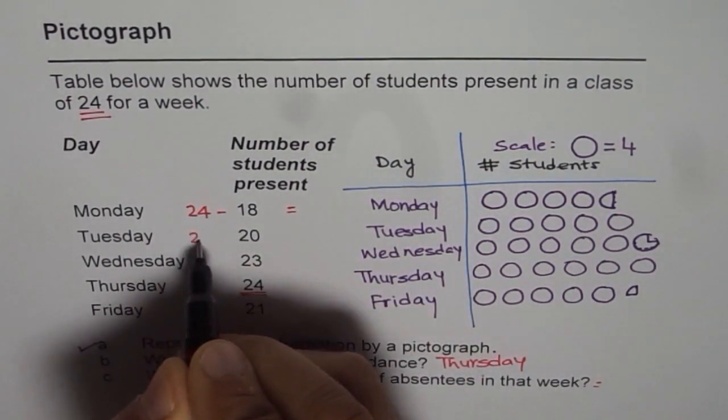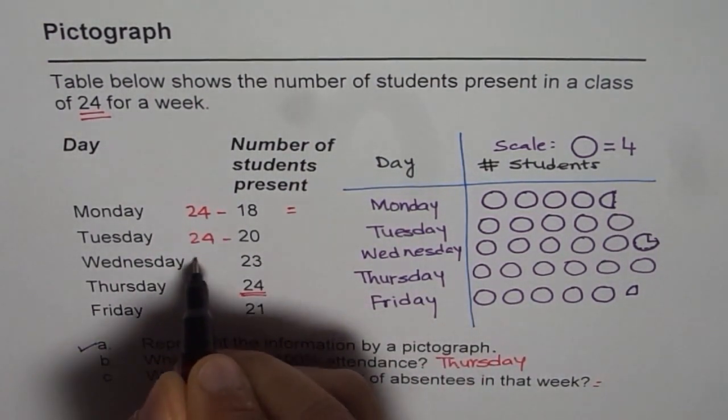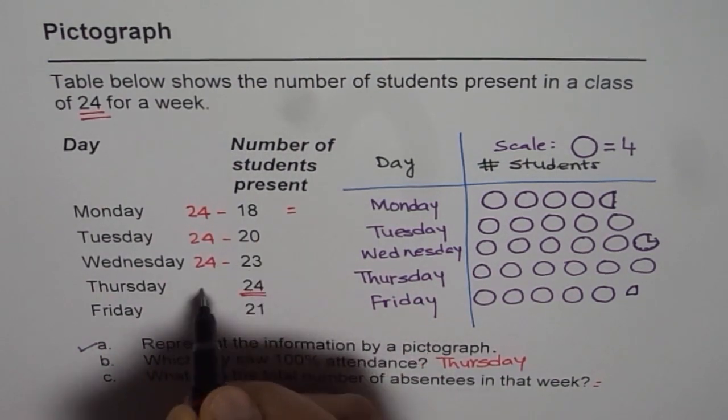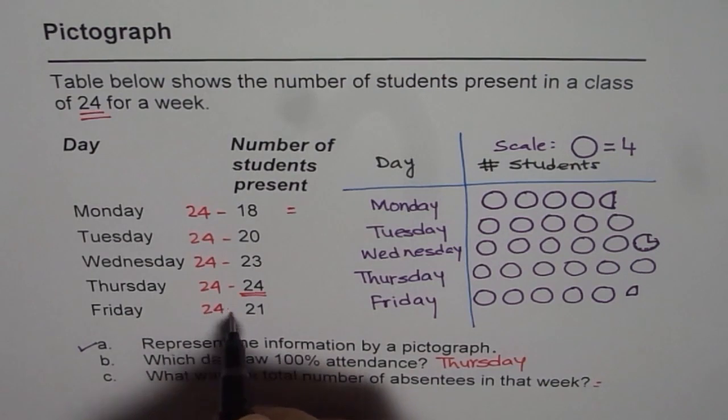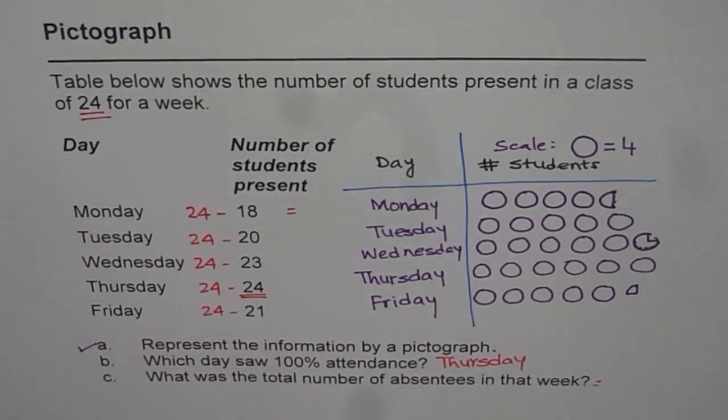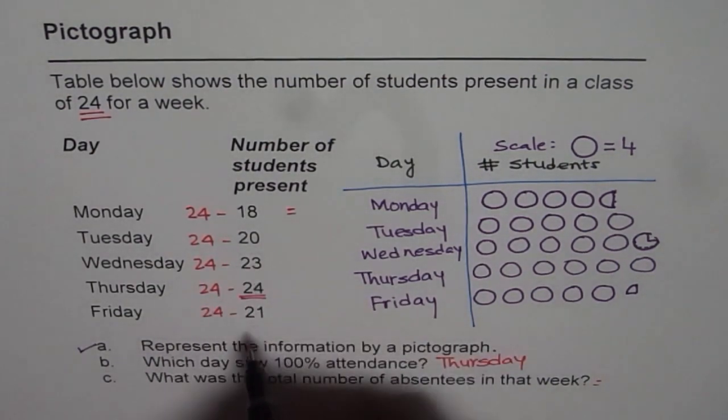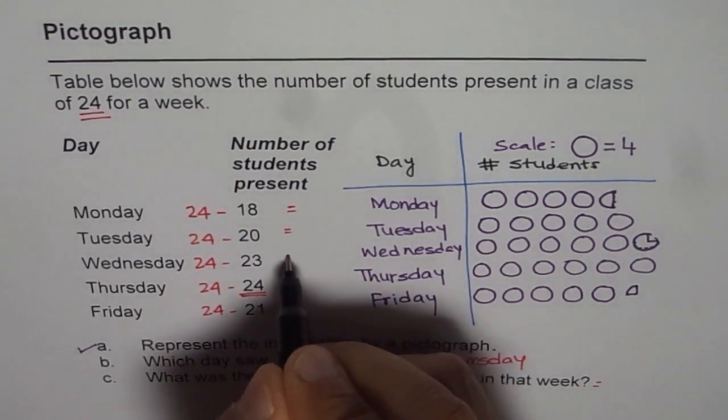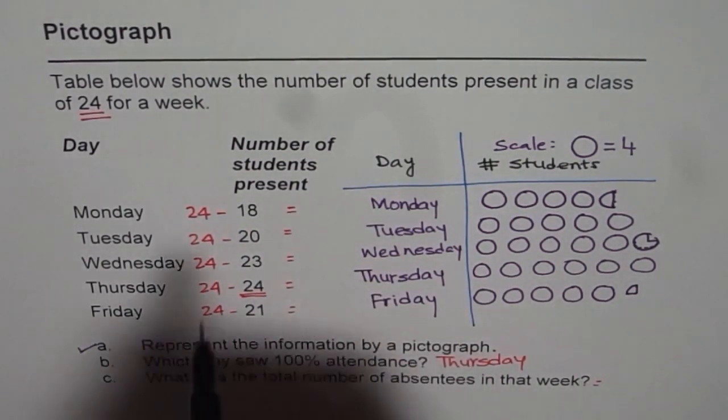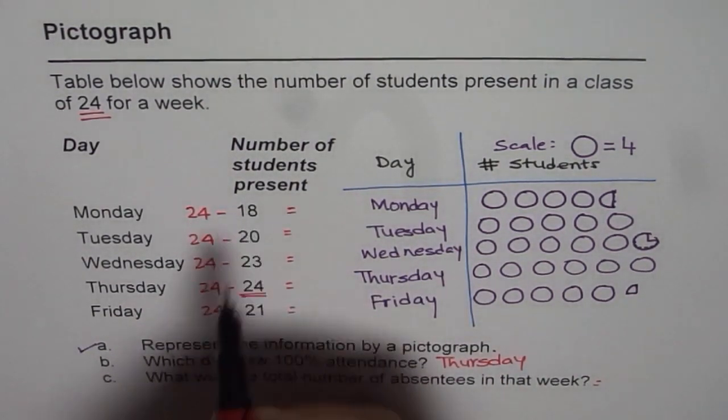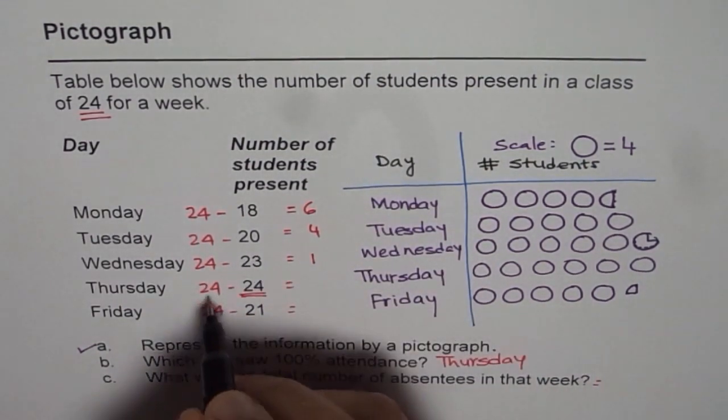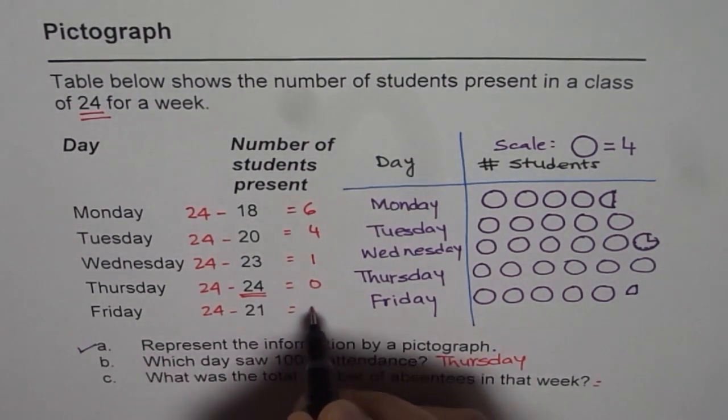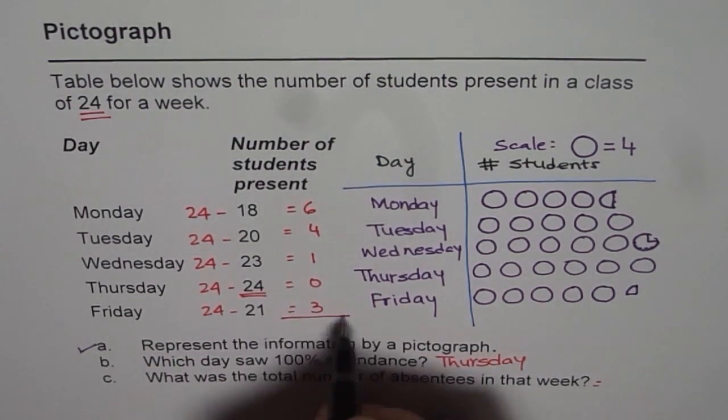24 take away 18, 24 take away 20, 24 take away 23. 24 take away 21 here. How much is it? 24 take away 18 is 6, 4, 1, 0 and 3.